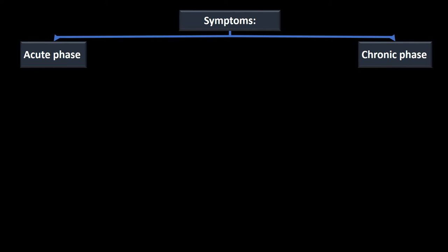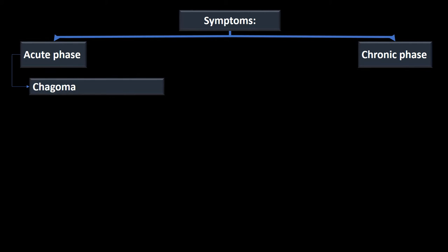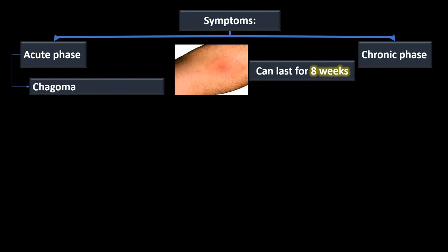In the acute phase, patients may get what's called a chagoma, characterized by inflammation at the site of infection — redness and swelling right where the person was bitten. A chagoma can last for upwards of eight weeks.